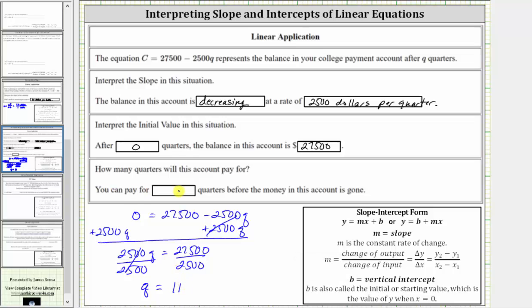So now we know you can pay for 11 quarters before the money in this account is gone or the balance is zero. I hope you found this helpful.